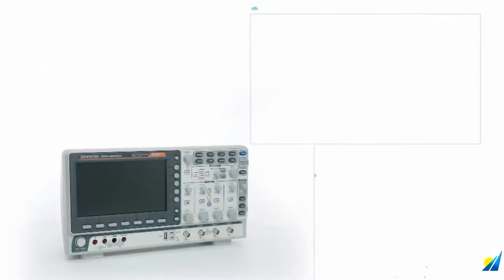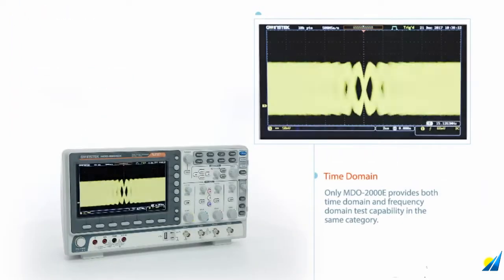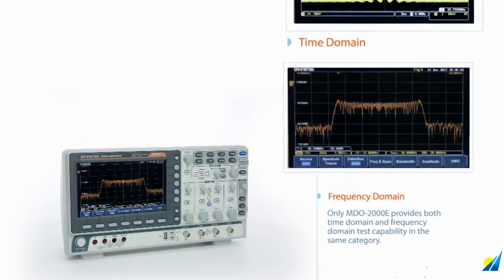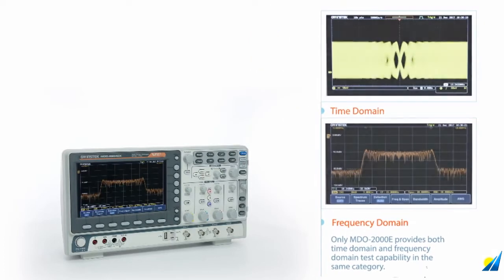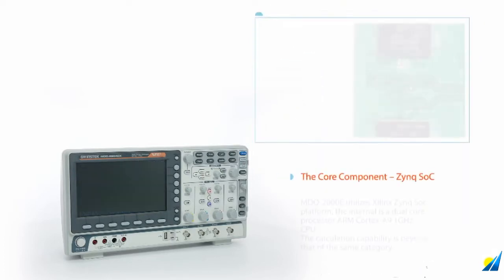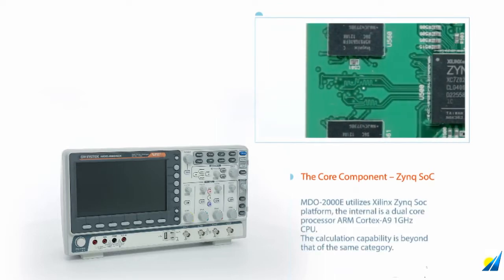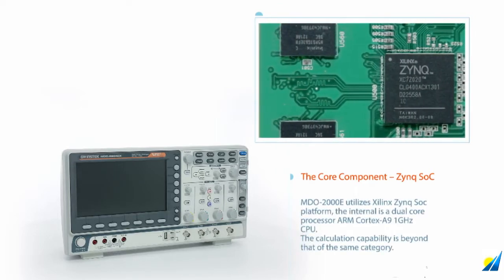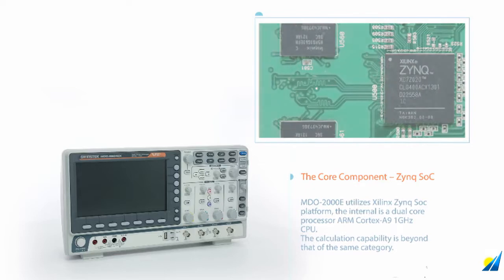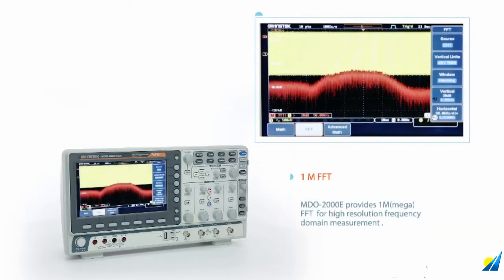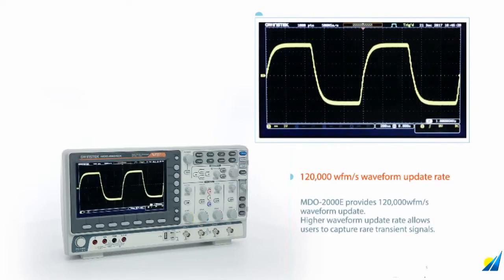Only the MDO-2000E provides both time domain and frequency domain test capability in the same category. Utilizing a Xilinx Zynq SoC platform, the internal processor is a dual-core ARM Cortex-A9 1 GHz CPU. The calculation capability is beyond that of the same category, providing 1 Mega FFT for high resolution frequency domain measurement and 120,000 waveforms per second update rate.